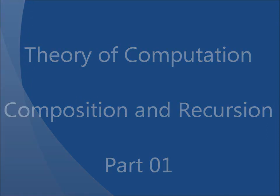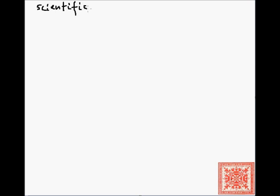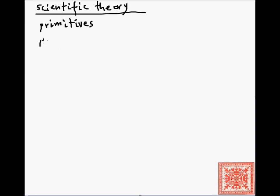In this screencast we'll start talking about composition and recursion. Let's take a broader picture on what we're about to do. Any scientific theory starts with a list of primitives. For example, if we are interested in developing a theory of two-dimensional geometry, our primitives might be dots, and then having two dots we can construct a line, a segment, and so forth.